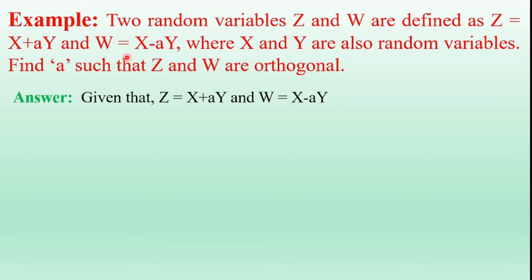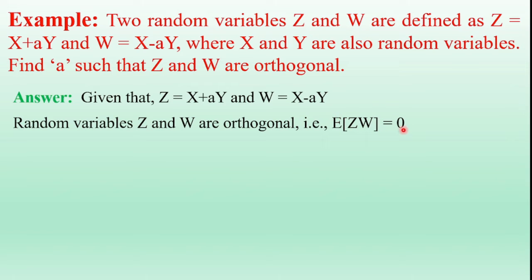Coming to the solution, given that Z equals X plus aY and W equals X minus aY. The random variables Z and W are orthogonal to each other. So the orthogonality condition is expectation of ZW equals zero.